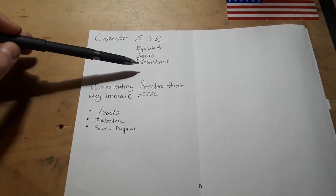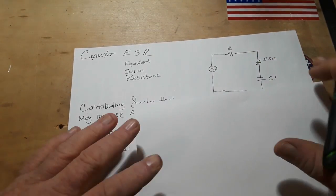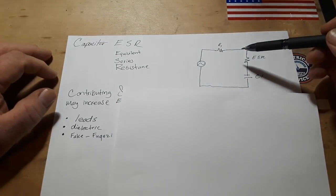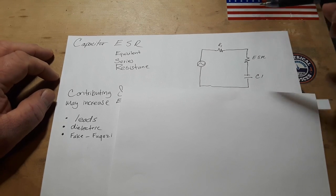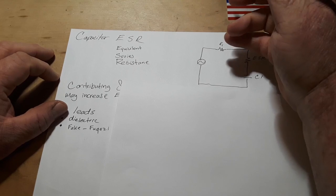So what is ESR? Well like I said it is the Equivalent Series Resistance. If you take a look at this circuit we have here, we have an AC sine wave and then we have our capacitor.